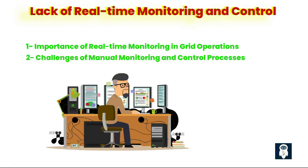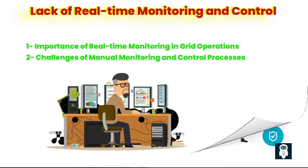Two: Challenges of manual monitoring and control processes. Many traditional distribution grids rely on manual monitoring and control processes, which are prone to human errors, delays, and inefficiencies. Automating these tasks through advanced technologies like smart meters, sensors, and SCADA systems can greatly enhance grid visibility and operational efficiency.